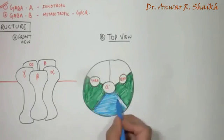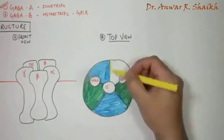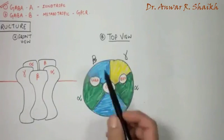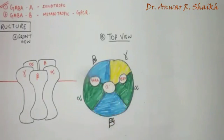subunits and this is one gamma subunit. So this two alpha, two beta and one gamma subunit is analogous to the same in the front view.